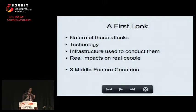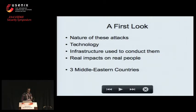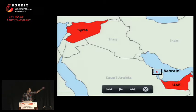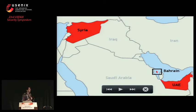I'll be talking about the nature of these attacks: what we observed, what sort of technology was being used, the infrastructure to conduct them, and emphasizing the real impacts on real people. The paper looks at three Middle Eastern countries — Syria, Bahrain, and the UAE — and examines various actors: governments, pro-government actors, and cyber mercenary groups, with the theme being attacks on political activists.